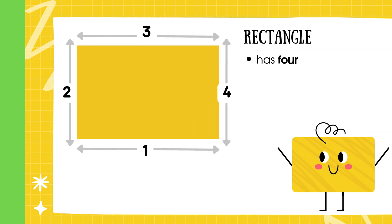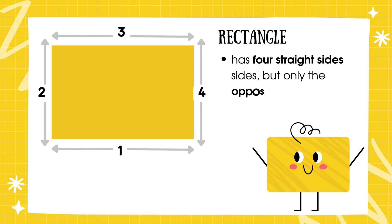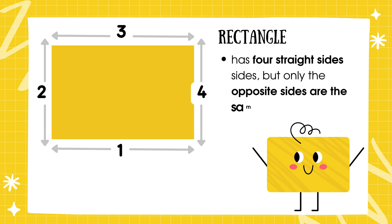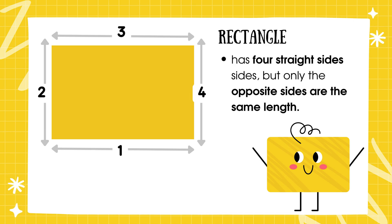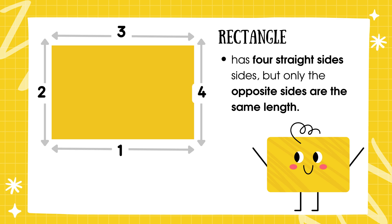A rectangle like this one also has four sides, but only the opposite sides are the same length. It is not a regular polygon because the sides aren't all equal. But that's okay — not all shapes need to be regular to be interesting.